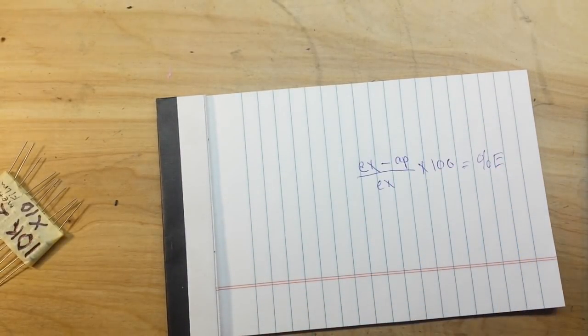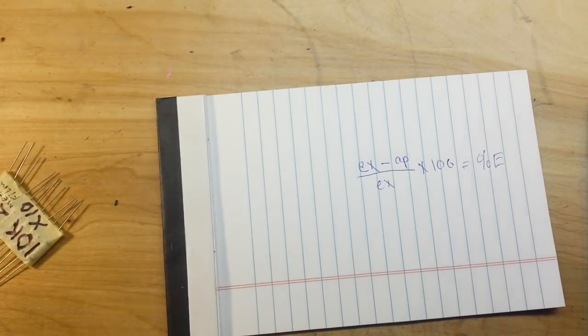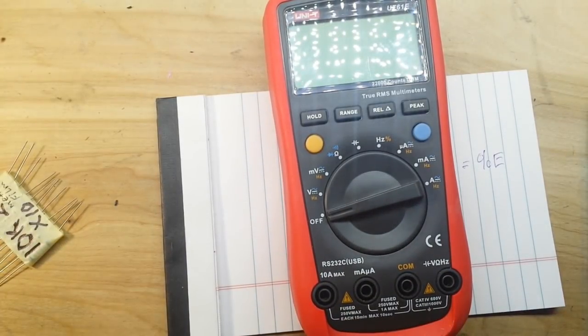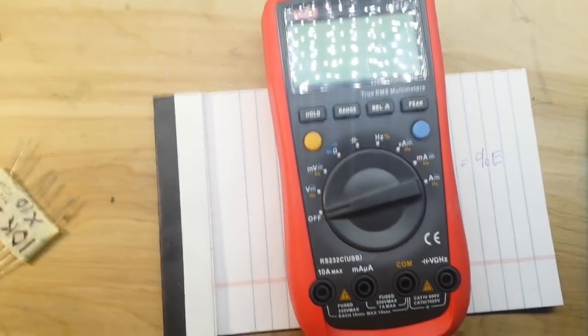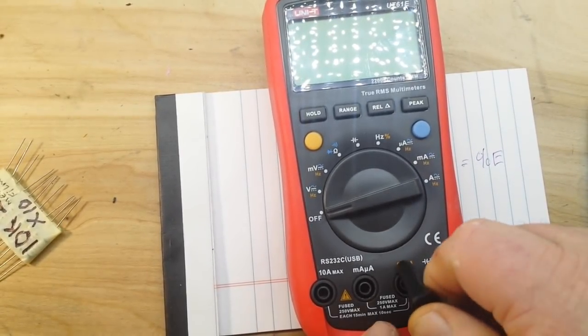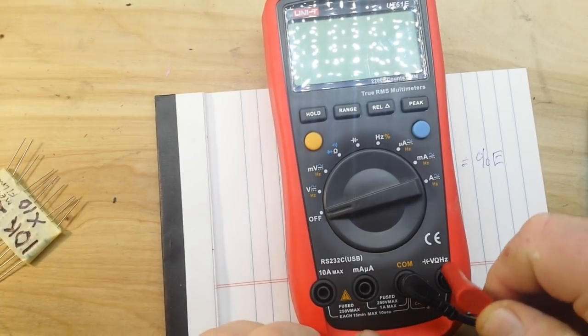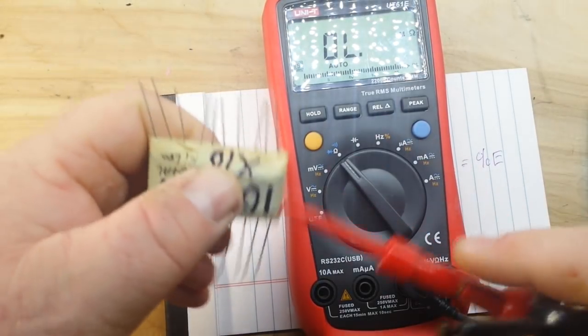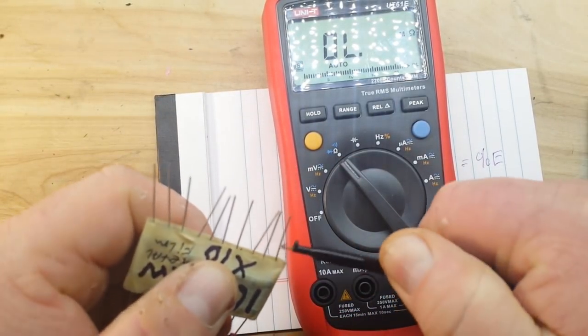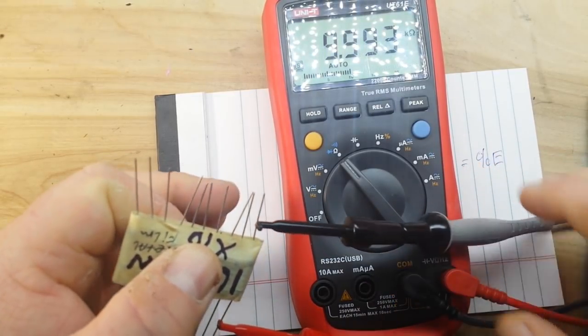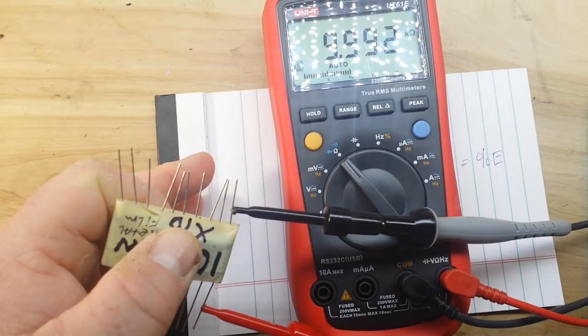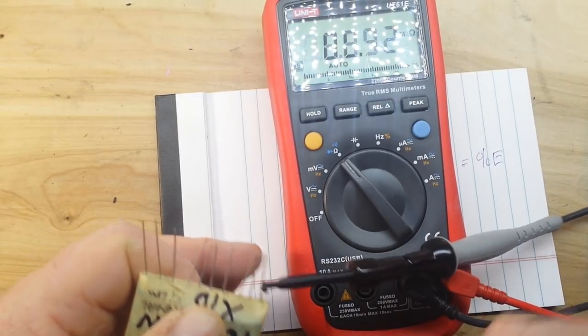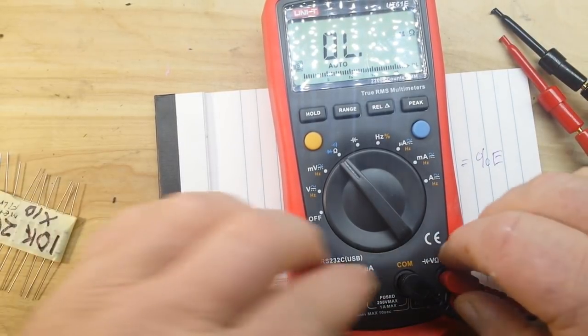In this case we'll go with the Unity UT-61E and we'll use the very nice Probe Master leads. 9.992. Okay, so you can see there's some difference there. So how do we say which one is the more correct?